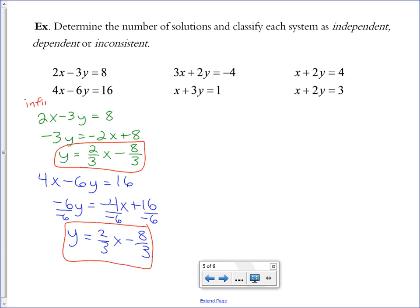So the first thing it asks us is how many solutions. We say infinitely many solutions, and it also asks us how we would classify it. So we should remember that the infinitely many solutions is classified as dependent. So it's asking us for both of these answers. How many solutions, and how would we classify it?